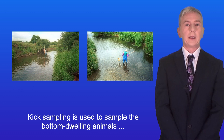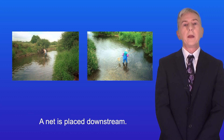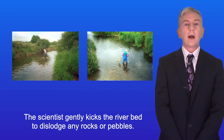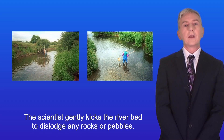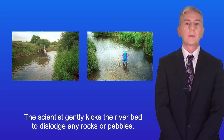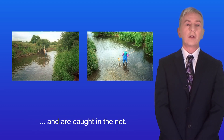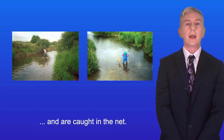Kick sampling is used to sample the bottom dwelling animals living in a riverbed. A net is placed downstream and the scientist gently kicks the riverbed to dislodge any rocks or pebbles. Any organisms which are disturbed move downstream and are caught in the net.